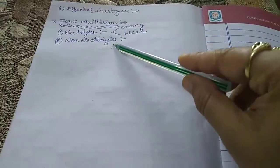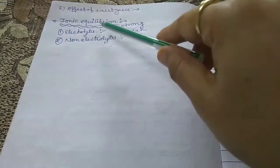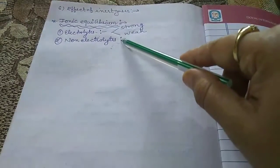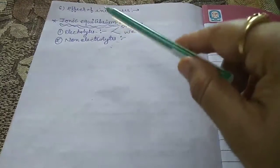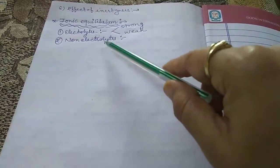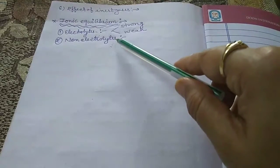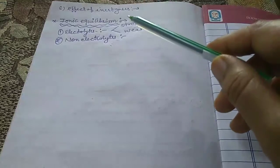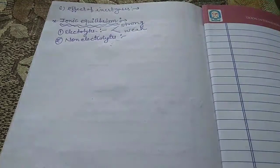The non-electrolyte is the opposite of the electrolyte. Substances which do not conduct electricity in the molten state or in the aqueous state are called non-electrolytes. Examples include solutions of sugar, urea, and glucose.